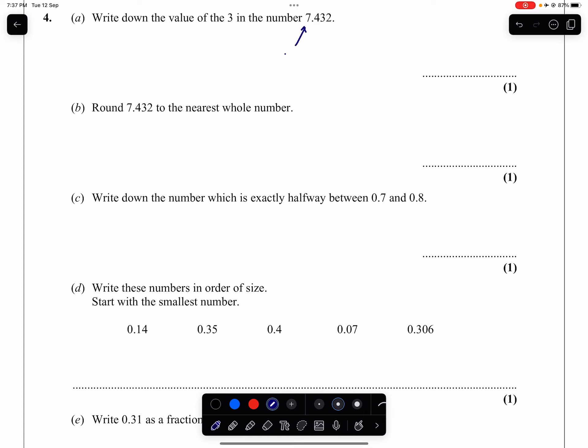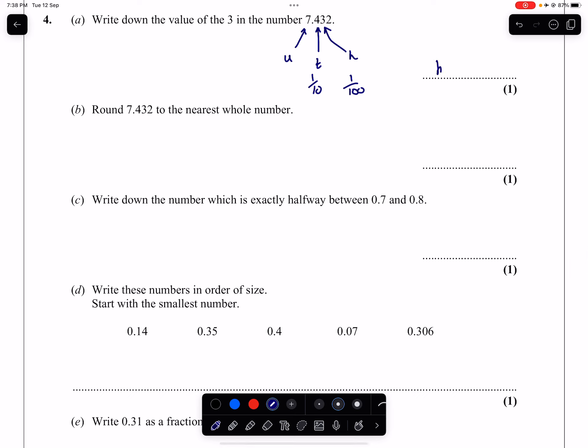So the 7 represents the units, the 4 here after the decimal place represents the tenths column, and the 3 here represents the hundredths column. So you can refer to this as just hundredths, you can refer to it as three hundredths,